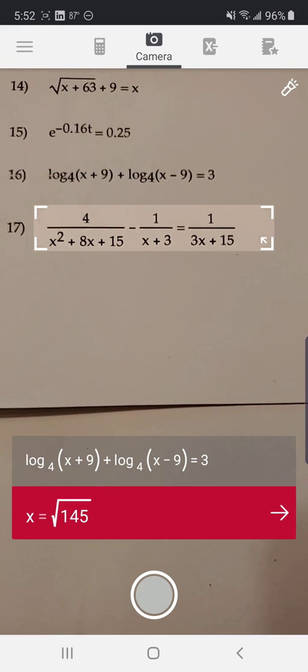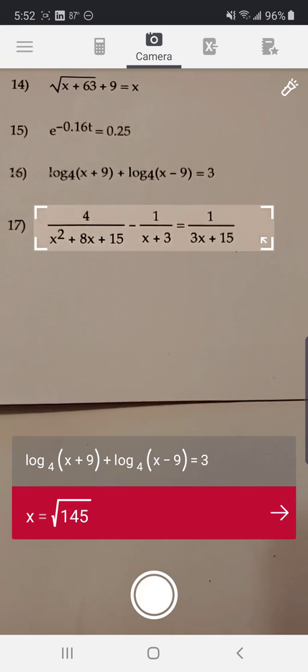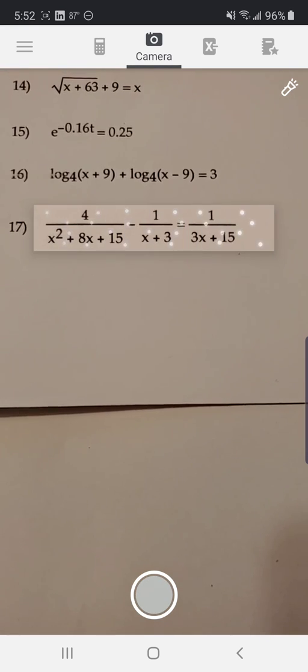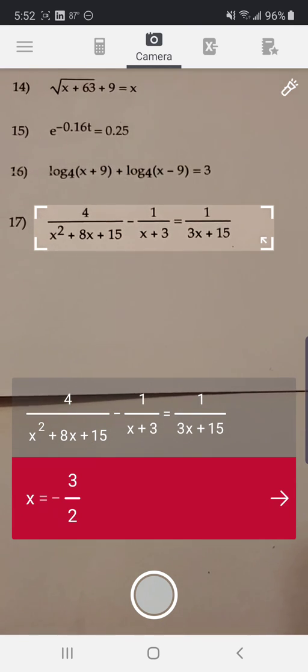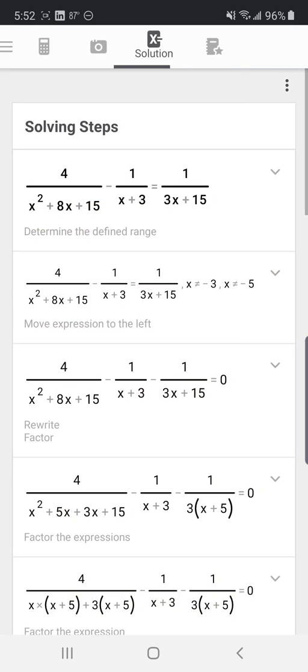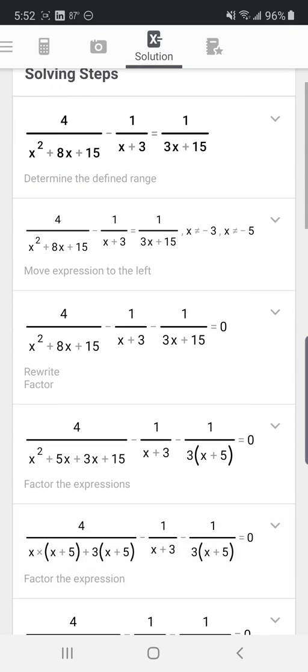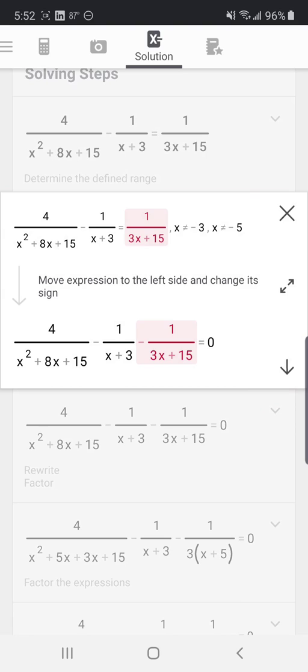And we have a rational equation. And Photomath does that too. And one other thing I'd like to point out, if we go to the step-by-step solution, notice that Photomath also gives us the restrictions. It tells us the numbers that x cannot be for solutions. x cannot be negative 3, x cannot be negative 5. That's kind of handy when you're looking for the domain of a rational function.